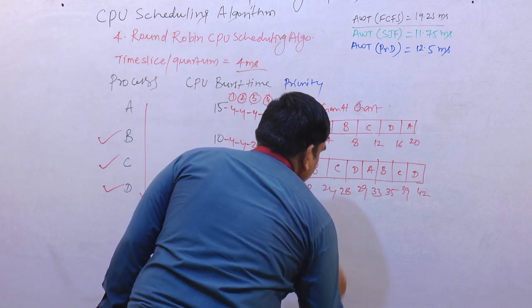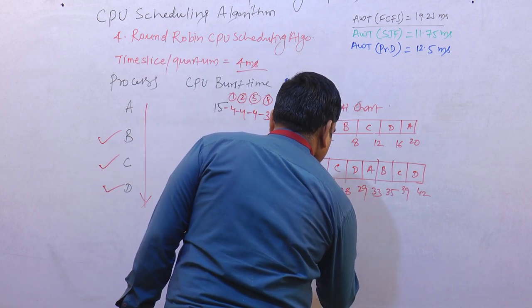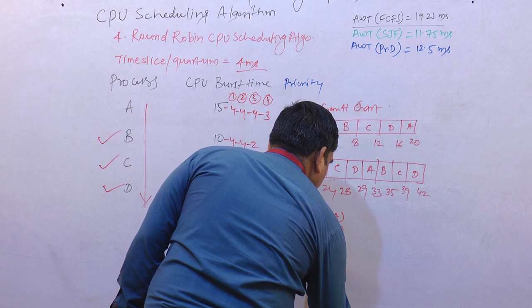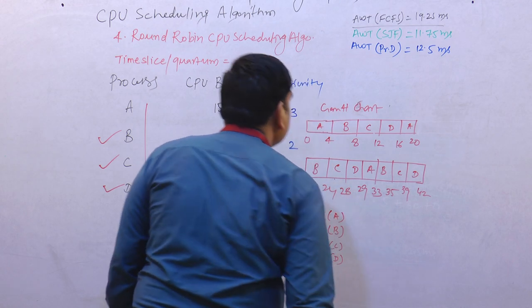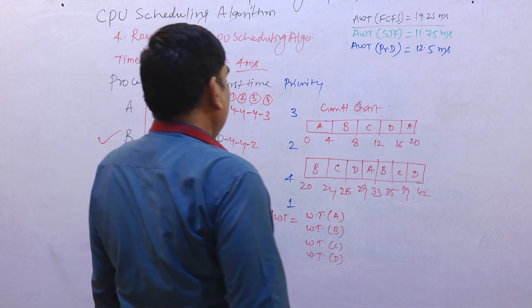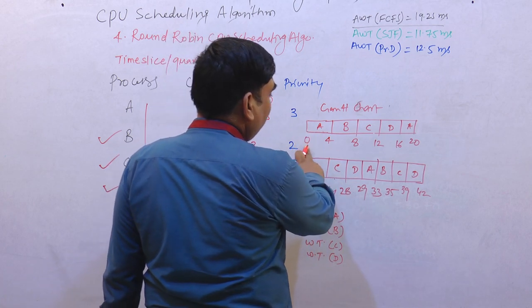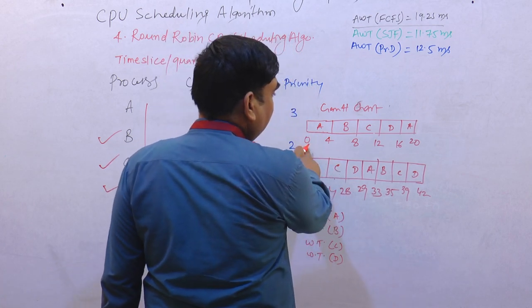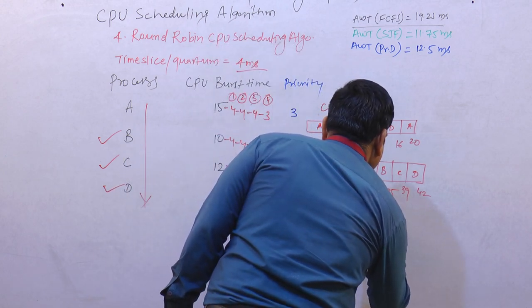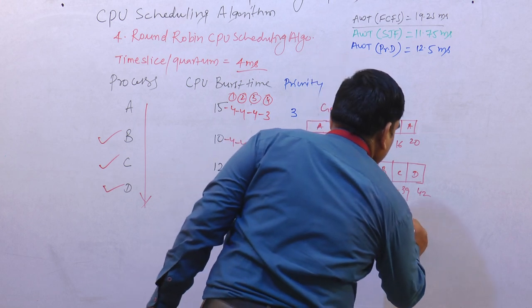We'll calculate the waiting time of all the processes: A, B, C, and D from start to end. For process A, it starts from 0 and we complete A at 33. The execution time of A is 15, so the waiting time is 33 minus 0 minus 15.